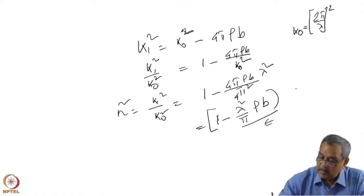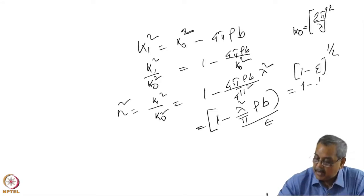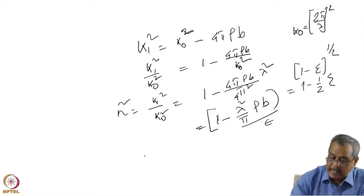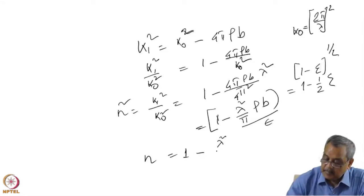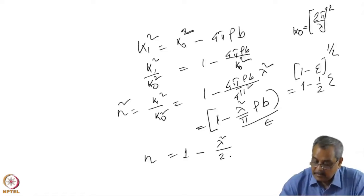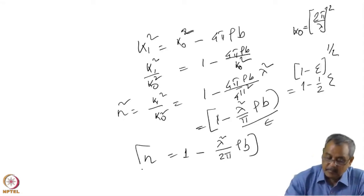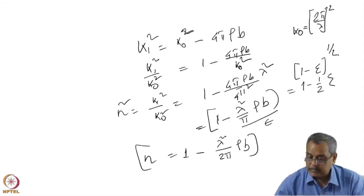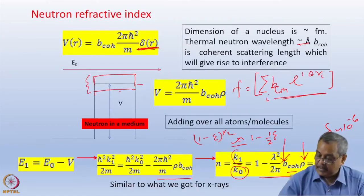This quantity is small, and since 1 minus ε to the power one-half is approximately equal to 1 minus half ε for small ε, applying that approximation I get n equal to 1 minus λ²·ρB divided by 2π. So this is what I obtain.